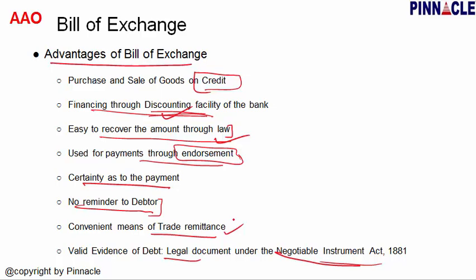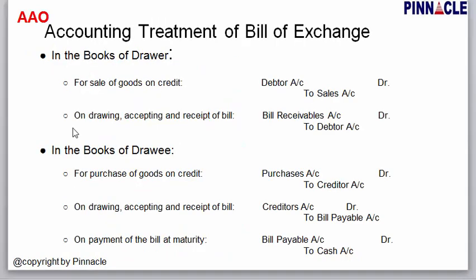Seventh, convenient means of trade remittance — the bill of exchange is a very easy way to handle trade remittance, meaning when we do trade transactions and need to make payments, the bill of exchange provides a convenient mechanism.